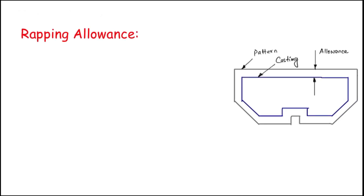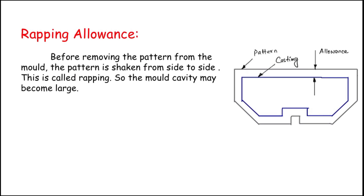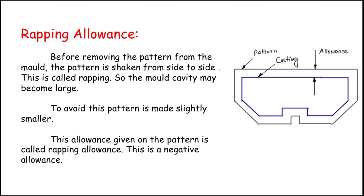The final allowance is wrapping allowance. Before removing the pattern from the mold, the pattern is shaken from side to side — this is called wrapping — and the mold cavity may become larger. To avoid this, the pattern is made slightly smaller. This allowance given on the pattern is called wrapping allowance. It is a negative allowance. The shaking expands the cavity by 1 to 1.5 mm more than the pattern size, so we calculate that beforehand and reduce the pattern size by 1 to 1.5 mm. Since we are reducing the dimension from the pattern, this is a negative allowance.